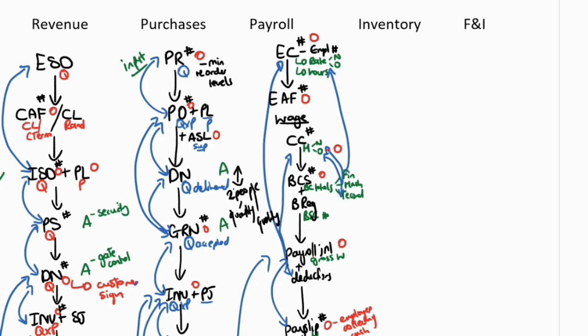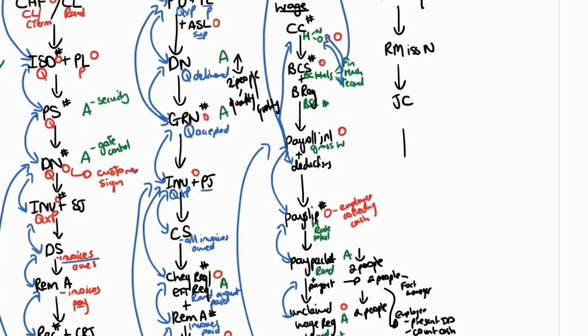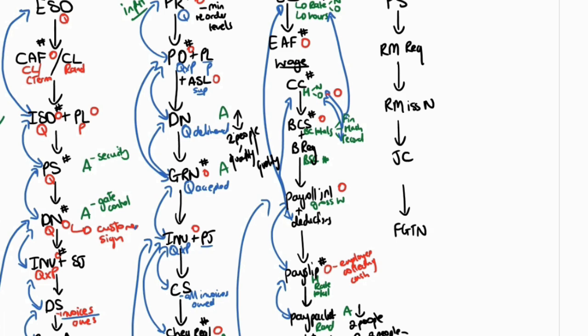The warehouse should be locked whilst counting is taking place so people can't move in and out and take goods. Now, the inventory production cycle starts with a production schedule, which details all items they are planning to produce based on revenue targets. Then there will be a raw material requisition — requesting the raw materials to meet the demands on that production schedule — followed by raw material issue notes, which is what they actually got from the raw material holding cells.